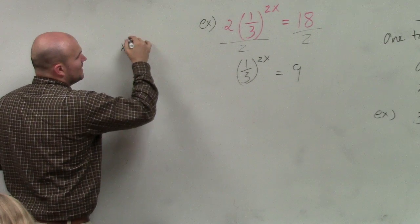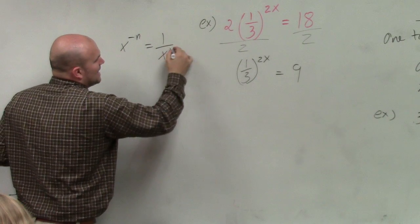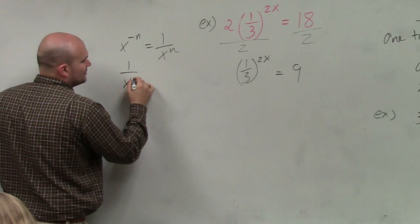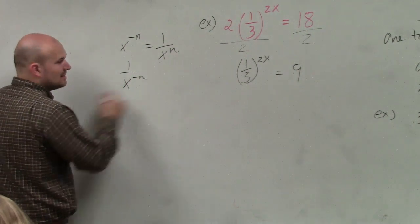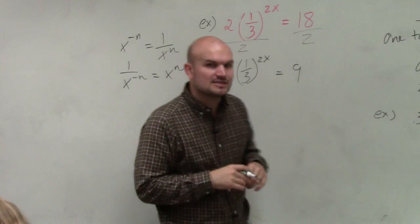What we learned is if you have x to the negative power, we can rewrite that as 1 over x with the positive power. In the same way, if I had x to the negative power in the denominator, if I rewrote that in the numerator, I could rewrite it as the positive power.